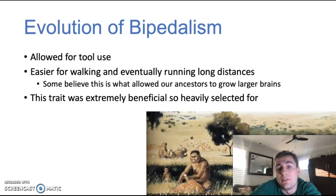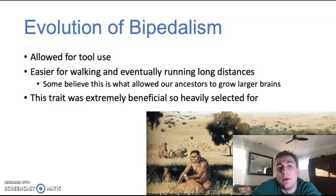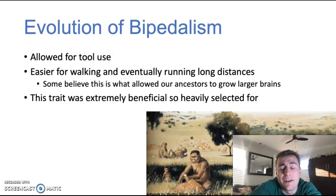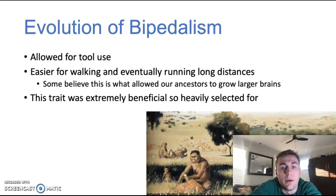Bipedalism allowed for quicker movements and eventually running to get across those large open plains, which also helped individuals survive by getting away from dangerous predators. The tool use coupled with being able to run long distances is what some people believe allowed ancestors to begin growing larger brains, which eventually led to communication and more sophisticated tool use — leading into us today. Because this trait was so beneficial, it was heavily selected for, and many individuals in future generations became bipedal, as bipedal organisms were much better at passing on their genes than their quadruped counterparts.